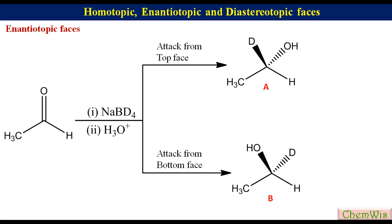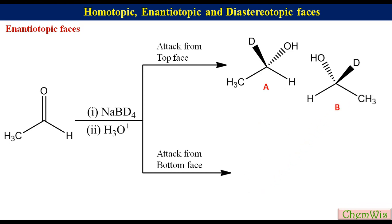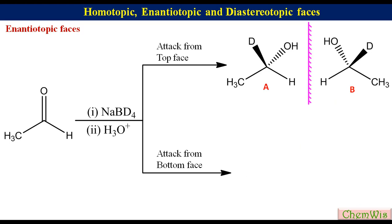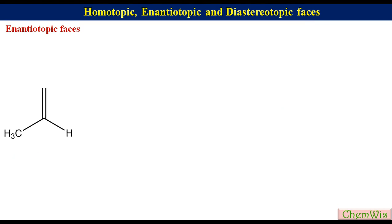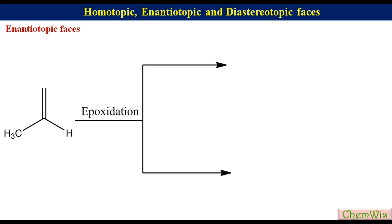Structures A and B are chiral molecules. The absolute configuration of structure A is S and that of structure B is R, so structures A and B are enantiomers. If we rotate structure B 180 degrees about this axis, we also find that structures A and B are enantiomers. So the two faces of the carbonyl group in acetaldehyde are enantiotopic.